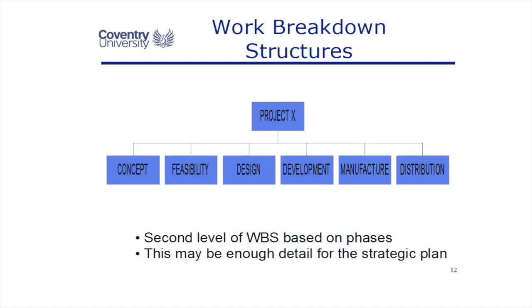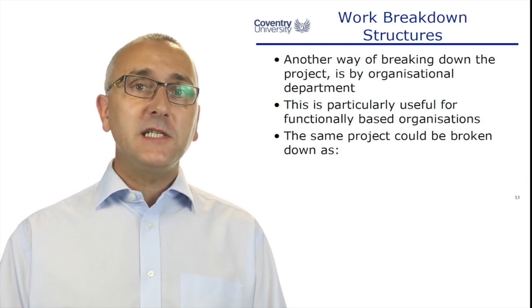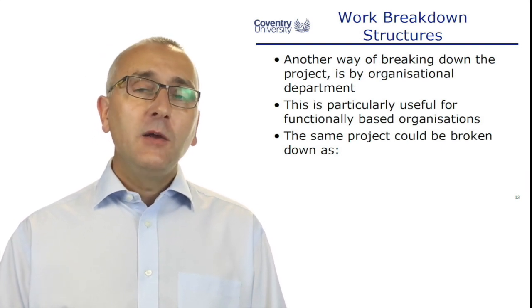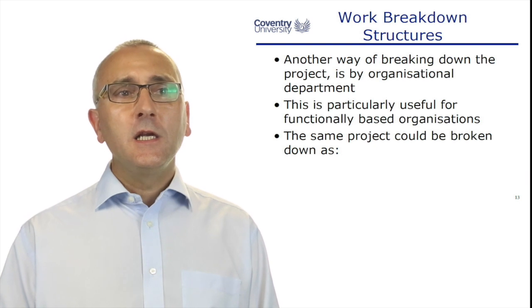I'm going to take project X and break it down into the phases of the project, which is one way of breaking it down into different work packages. This project involves concept, feasibility, design, development, manufacture, and distribution. Once we have the key dates for these phases, this might be enough detail for the strategic plan for senior management — when does design finish, when does development finish, when does distribution start. Anything done during feasibility becomes part of the feasibility work package; anything in development testing becomes part of the development work package.